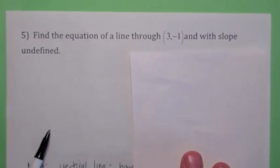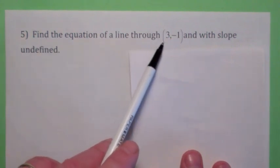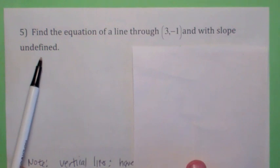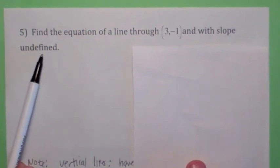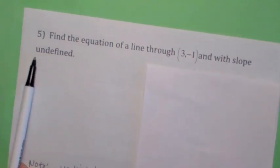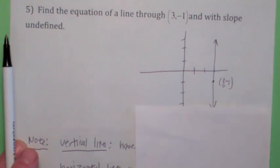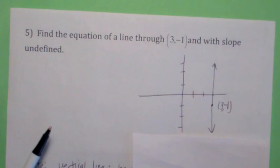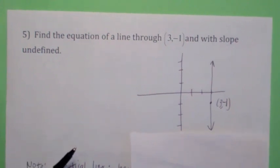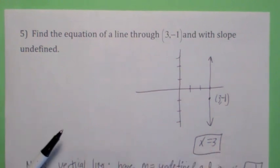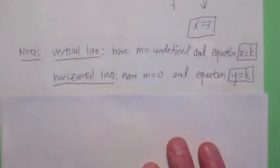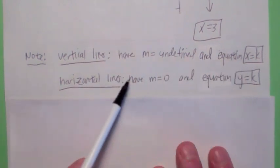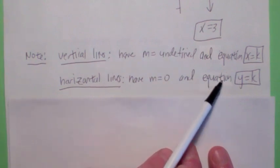These are the ones that get students. Suppose you want to find the equation of a line through the point 3, negative 1 with slope undefined. If the slope is undefined, you can't use the point-slope formula, so draw a picture. The line goes through 3, negative 1 and its slope is undefined, so it's vertical. The equation would be x equals 3. Remember: a vertical line has undefined slope and equation x equals a constant; a horizontal line has slope zero and equation y equals a constant.